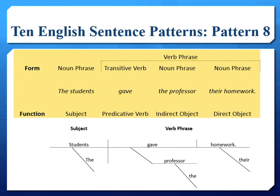In sentences that follow pattern eight, an indirect object conveys that there is a receiver. So in the example, the professor is the indirect object who receives the homework. The noun phrase 'their homework' is the direct object because it is the homework that the transitive verb 'gave' is acting upon.